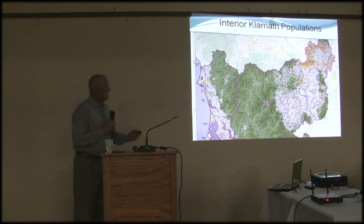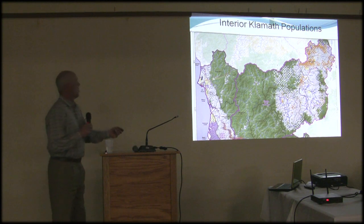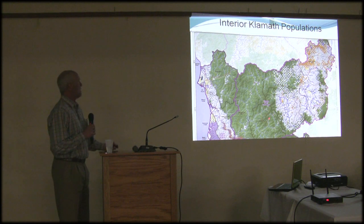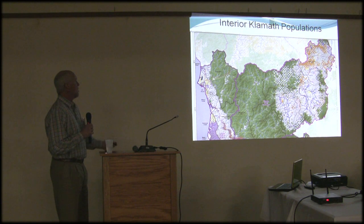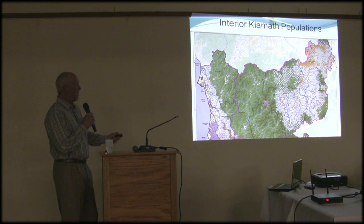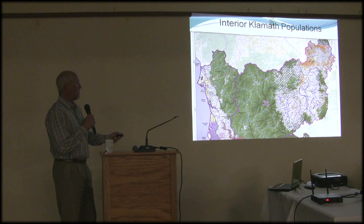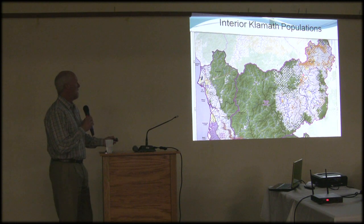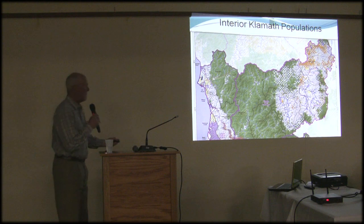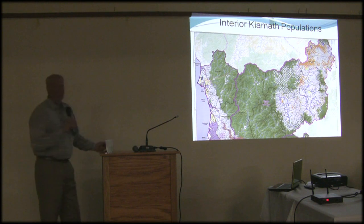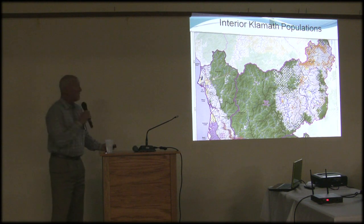For orientation purposes, a map is already on the board. We're focusing on three populations: the Scott River, the Shasta River, and the Upper Klamath population unit, which historically extended to Spencer Creek, above JC Boyle Dam. Currently habitat is blocked at Iron Gate Dam, in the main stem, and in those other tributaries besides the Shasta and the Scott.